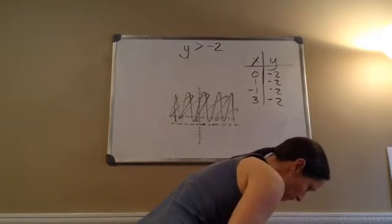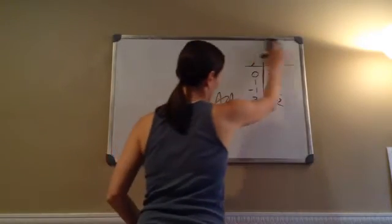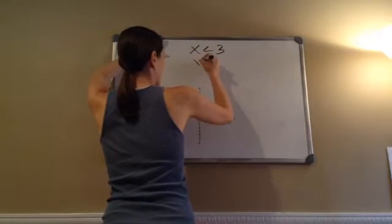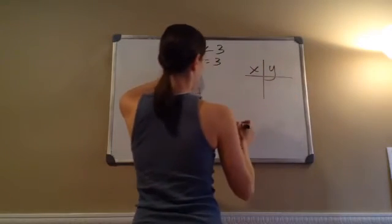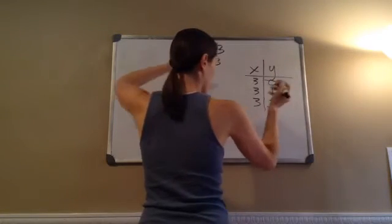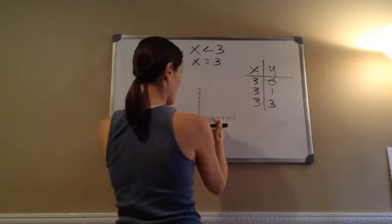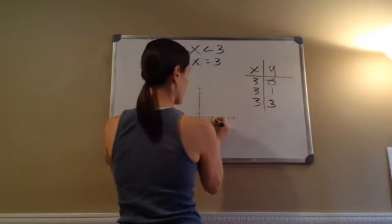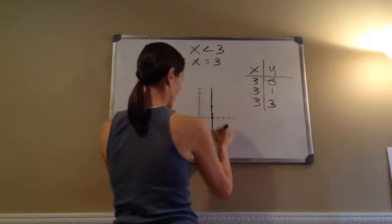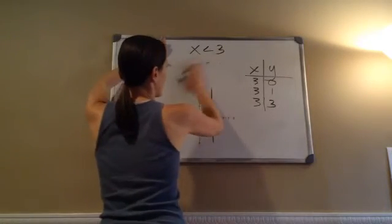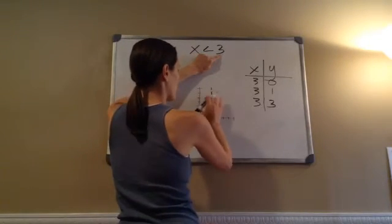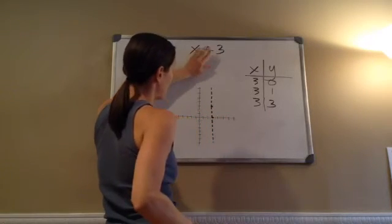And the last one — this one has x equals something. X is less than 3. Again, we want to say x equals 3 for just a minute. If x is 3, then let's say y is 0, 1, and 3. So x is 3 for each: (3, 0), (3, 1), (3, 3). Hopefully you see we've got this vertical line right here. Now it says the shaded part is less than 3 — it didn't say equal — so we just make it a dotted line.